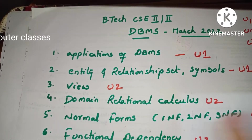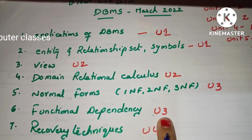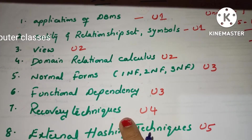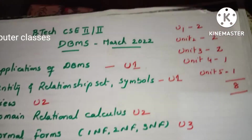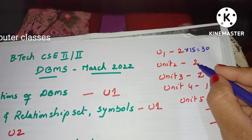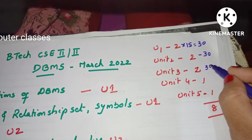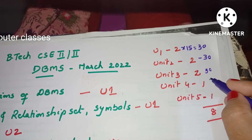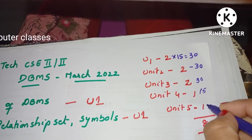The fifth question on normal forms is in Unit 3. The sixth question on functional dependency is also Unit 3 — from functional dependencies we go to normal forms. So two questions are in Unit 3. The seventh question on recovery techniques is in Unit 4. The last question on hashing techniques came from Unit 5. So from Unit 1: two questions = 30 marks; Unit 2: two questions = 30 marks; Unit 3: two questions = 30 marks; Unit 4: one question = 15 marks; Unit 5: one question = 15 marks.